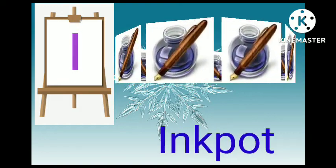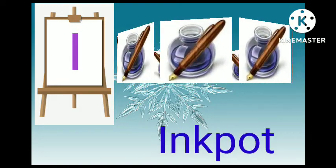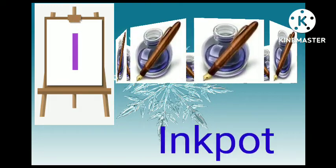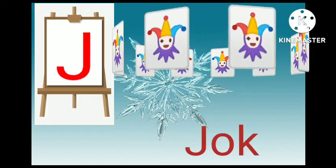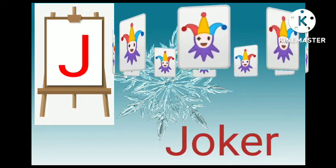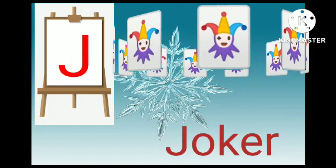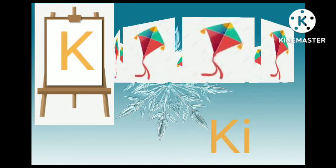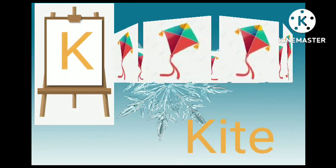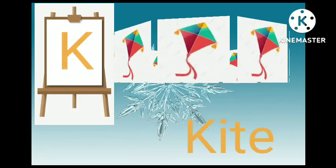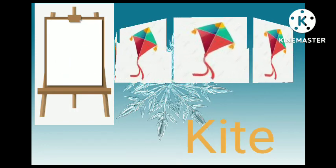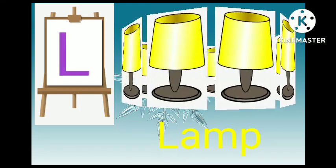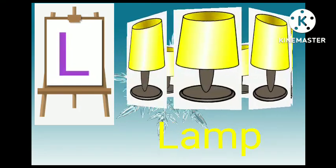I for ink pot, J for zooker, K for carrot, L for lamb.